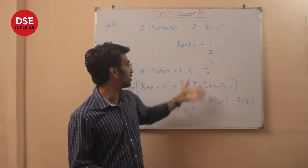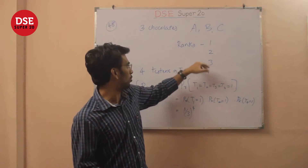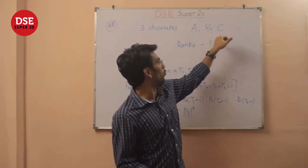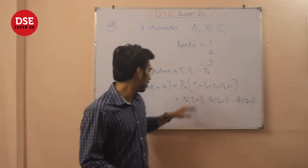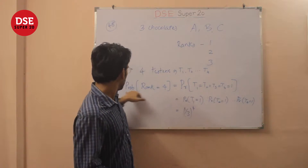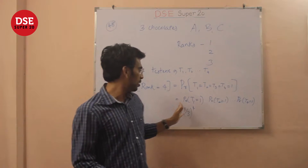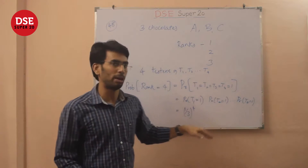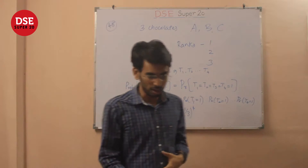Since testers are doing that randomly, the probability of assigning rank 1 to a chocolate is 1/3. Therefore, the total probability is just (1/3) multiplied four times, that is 1/81. And that's the answer.